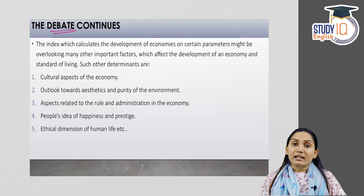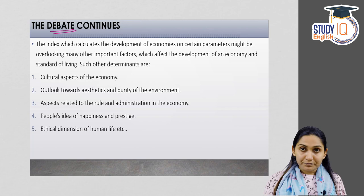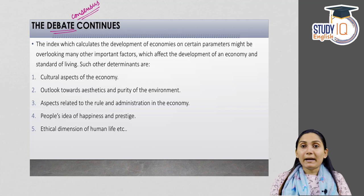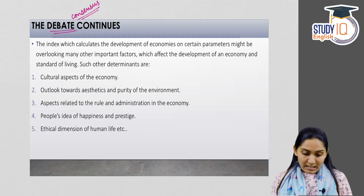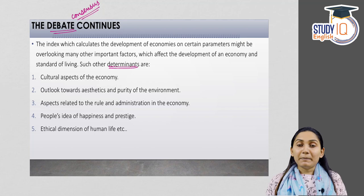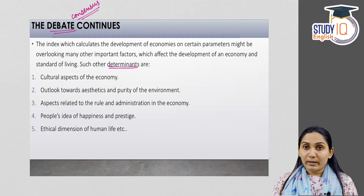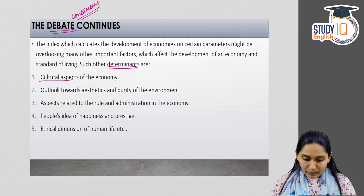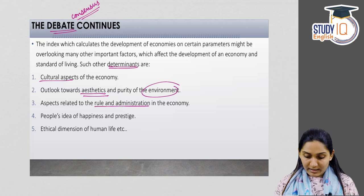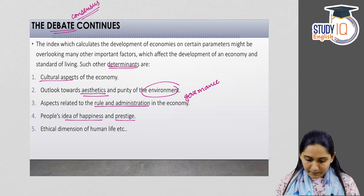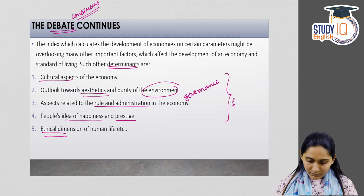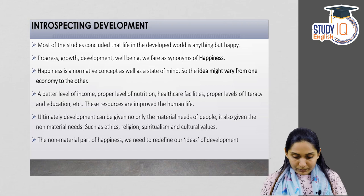The debate is still continuing about what parameters should be included in calculating human development. Many economists and people around the world have suggested that more indicators and dimensions should be added to the HDI. These include cultural aspects of an economy, outlook towards aesthetics, purity of the environment, aspects related to rule and administration — that is, governance — people's ideas about happiness and prestige, and the ethical dimensions of human life.